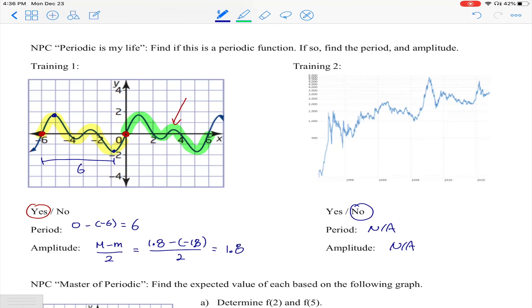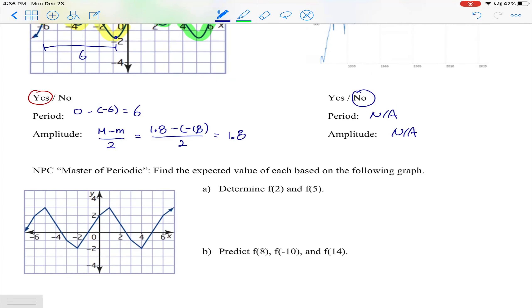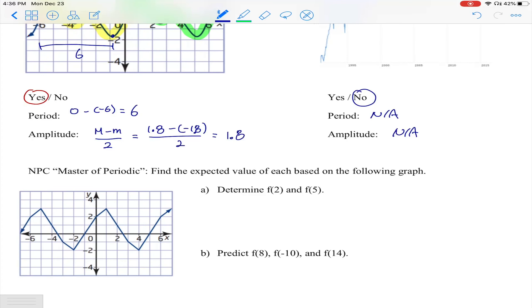The next NPC that will help us is Master of Periodic. Find the expected value of each based on the following graph. The periodic function has the cycle, so each value will repeat forever. As long as you find the pattern within it, then you can actually anticipate what the next one will be.